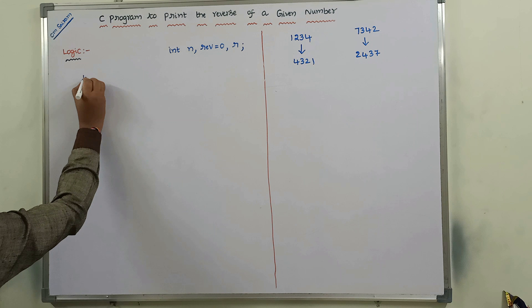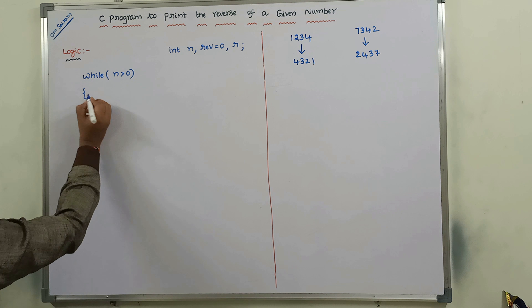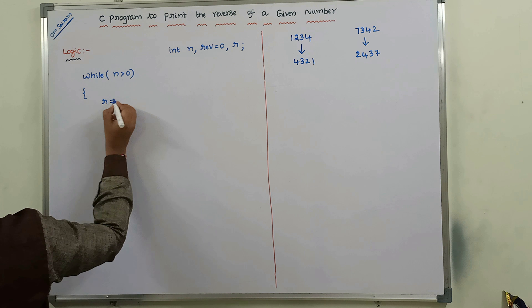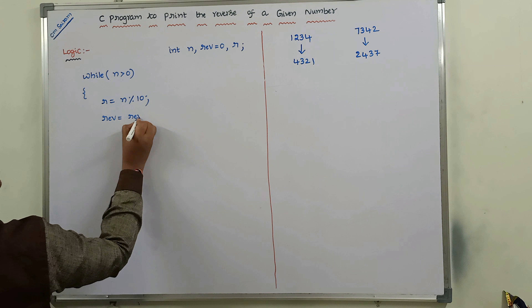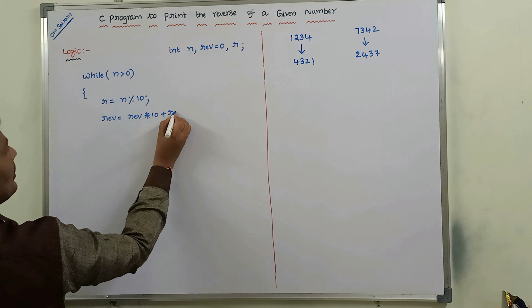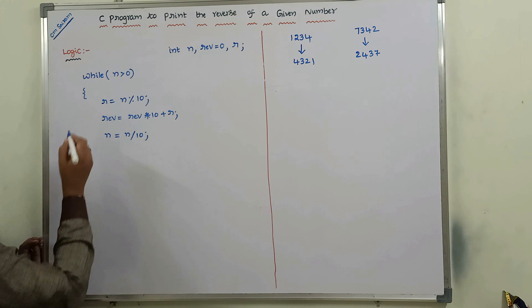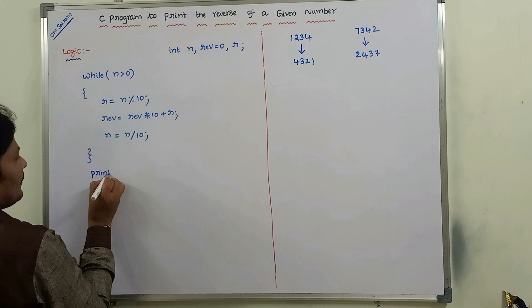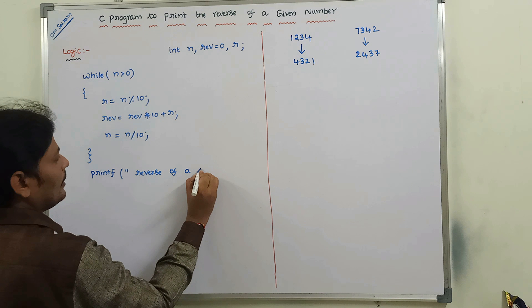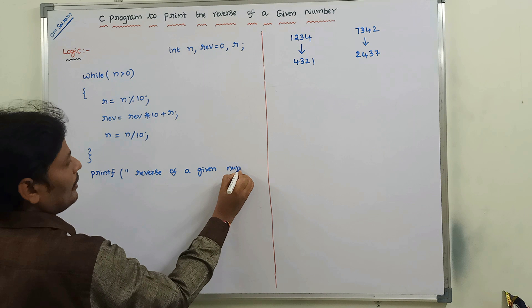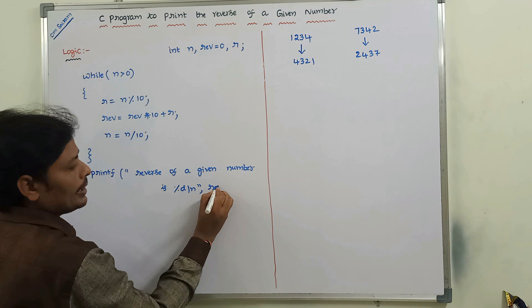What is the logic we have to follow? I am taking a while loop: while n greater than 0, brace begin. First, r is equal to n modulus 10. Next, rev is equal to rev into 10 plus r. Next, n is equal to n divided by 10. These are the three statements in the body of the while loop. After the while loop, we print: the reverse of a given number is %d, and the result is stored in the variable rev.